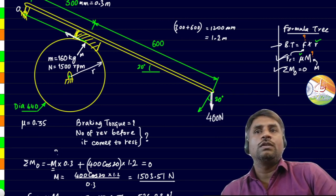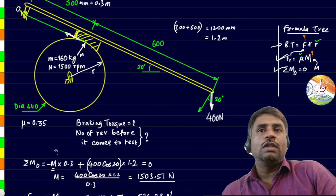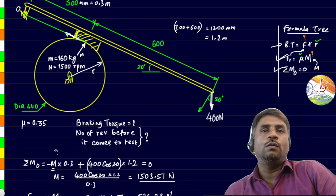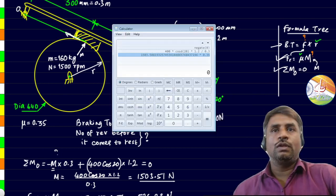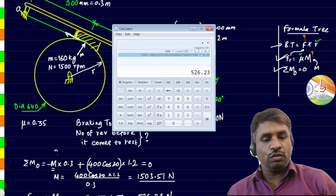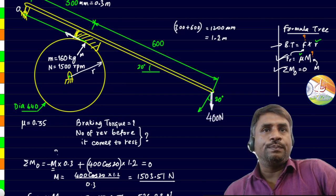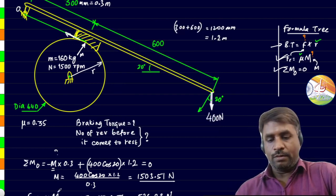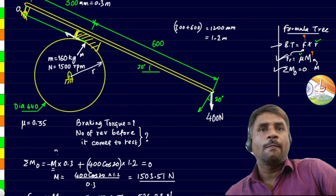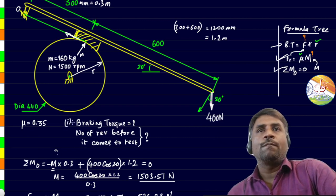Now it's time for the braking torque, which is what we need. That is friction force multiplied with the radial distance. 526.23 multiplied with the radius. This is the diameter 0.44, so half of that is what we need. 526.23 multiplied with 0.44 divided by 2, we get 115.77 newton meters. This here is the answer for the first bit.